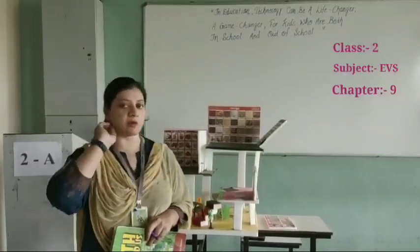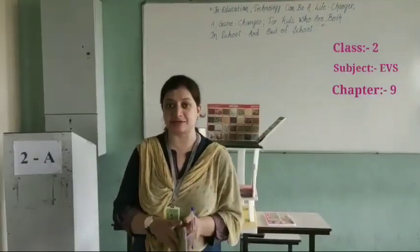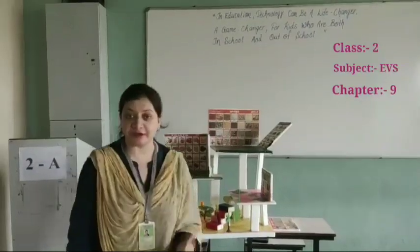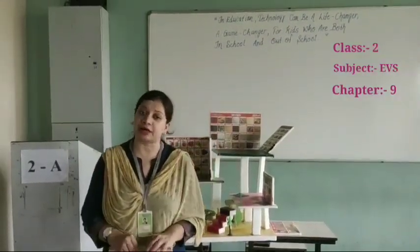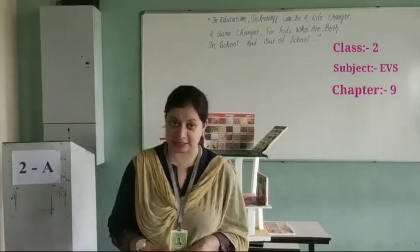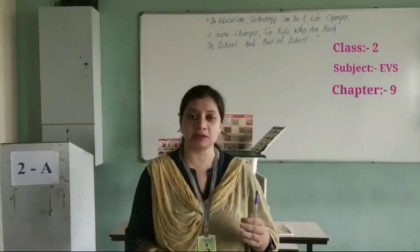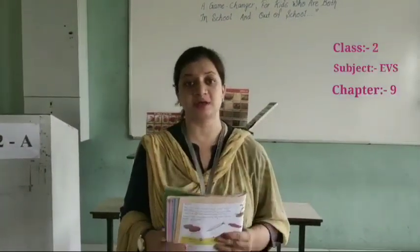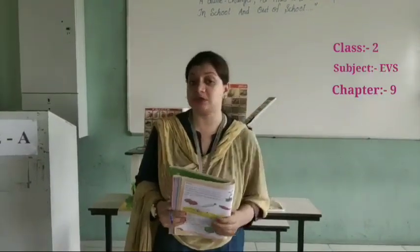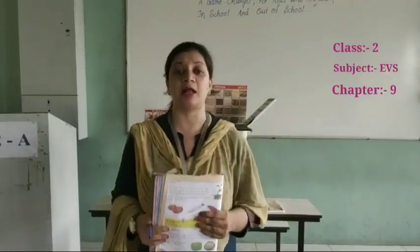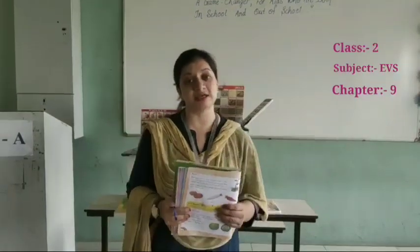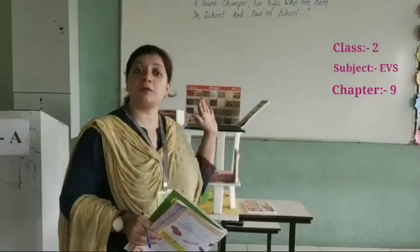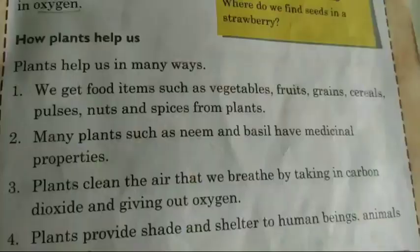So we have already learned about fruits, vegetables, pulses, spices. I have shown you all of these in the live model. For practical understanding, if you want to see them live, you can ask your parents. All these things — fruits, vegetables, pulses, cereals — where do we get them? We get all of them by the help of plants. All these things grow on the plant.